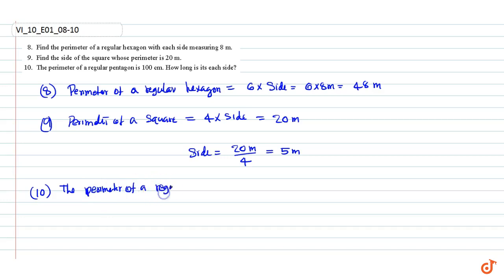That is given to be 100 centimeters. Therefore, side equals 100 divided by 5, which equals 20 centimeters. These are our answers.